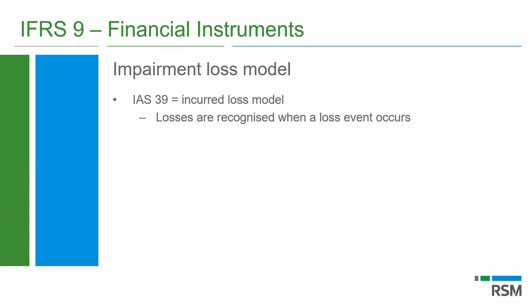Under IAS 39, as we were used to, it was an incurred loss model — losses are recognized when a loss event happens, such as a debtor entering bankruptcy, going into default, going into liquidation, or passing 150 days. IFRS 9 refers to what we call an expected loss model. It's a forward-looking approach that we now need to take into account. It is a bit of an interesting word because firstly we don't expect a loss, and it's not a loss really until it actually occurs — but yes, that's the term referred to in IFRS 9 and it's a forward-looking approach.